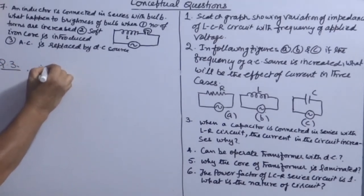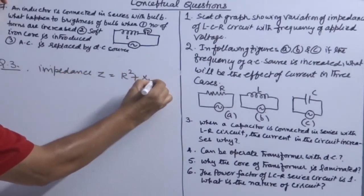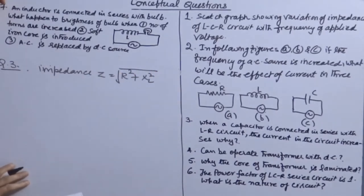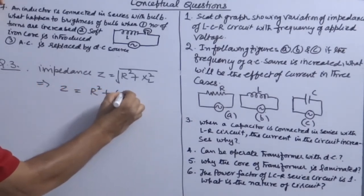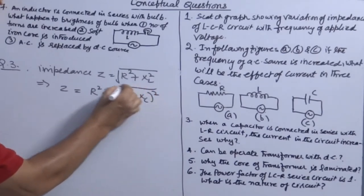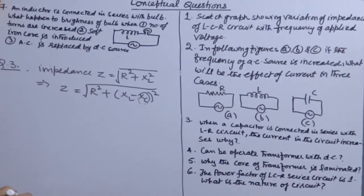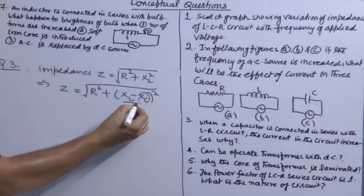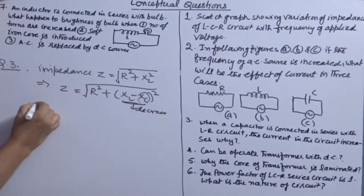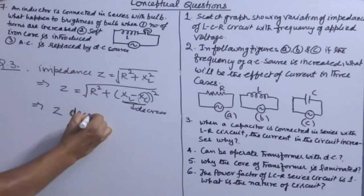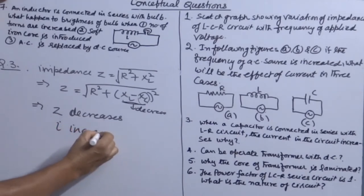Impedance of LR circuit: Z = √(R² + XL²). Now when you introduce a capacitor, impedance becomes Z = √(R² + (XL - XC)²). There will be some value of XC, so the XL factor value will decrease. As a result, impedance decreases by introducing the capacitor. Impedance decreases, therefore current increases.